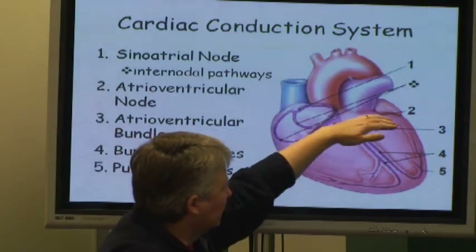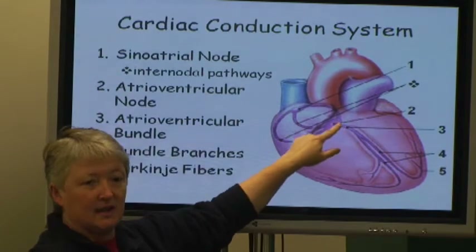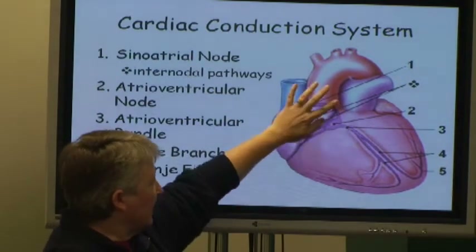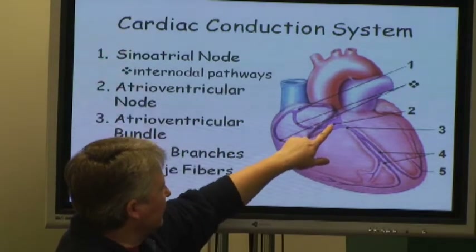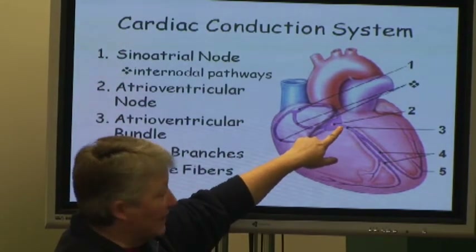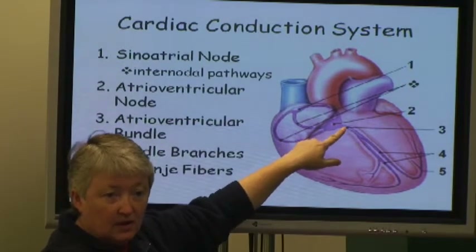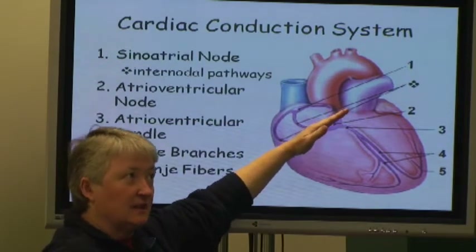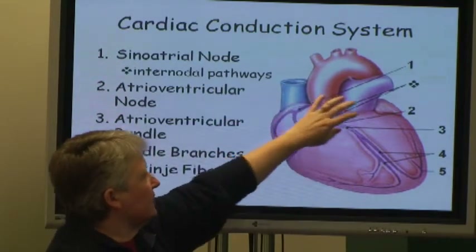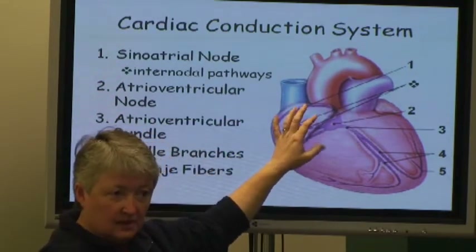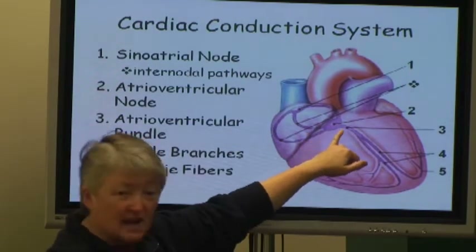The fiber skeleton means that the AV node and AV bundle connection is the only electrical connection between the atria and the ventricle. As the signal passes from the AV node to the AV bundle, it goes from the top of the heart to the bottom. This allows the atria to contract first and then the ventricles. The signal essentially slows down at that junction.